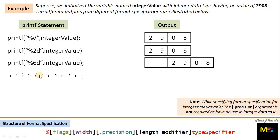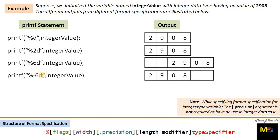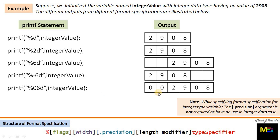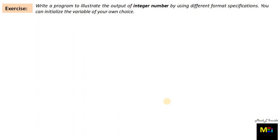In the next printf statement, a flag argument of minus (-) is passed with width argument 6, which left-justifies the mentioned width, giving the corresponding output. In the next statement, flag argument 0 is passed with width argument 6, which replaces the leading empty fields with zeros as shown in the output. Please note: while specifying format specification for an integer type variable, the precision optional argument is not required and has no use in the integer data case.